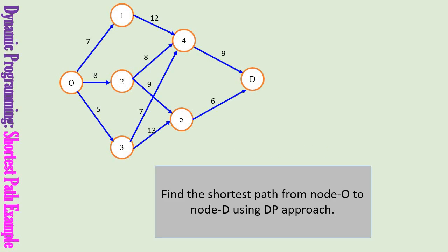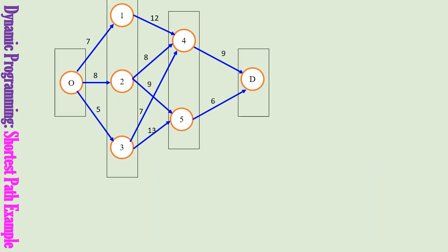In this graph, you are given 7 cities and the goal is to find the shortest path from node O to node D. The numbers next to the edges represent the distances. Let us first identify the stages of this shortest path problem. Clearly, these are the stages of the problem.